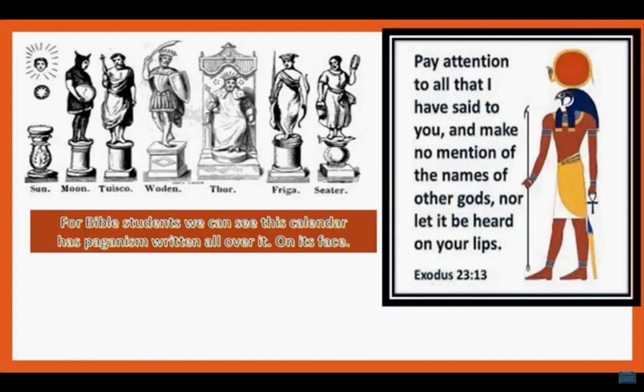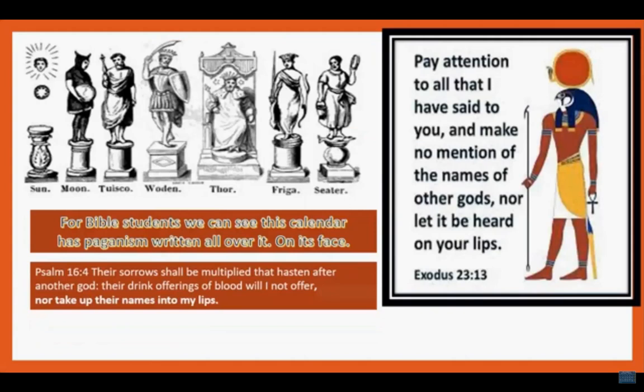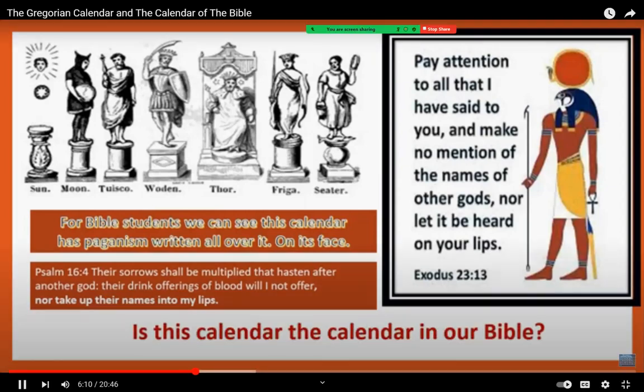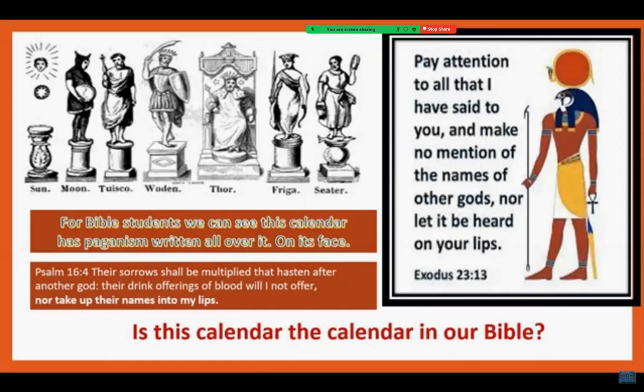For Bible students, we can see this Gregorian calendar has paganism written all over its face. Exodus 23:13 says, 'Pay attention to all that I said to you, and make no mention of the names of other gods, nor let it be heard on your lips.' Psalm 16:4 says, 'Their sorrows shall be multiplied who hasten after another god; their drink offerings of blood will I not offer, nor take up their names on my lips.' Of course, we have stated all these gods' names in telling you about this, and each person has to figure out how they will manage that.